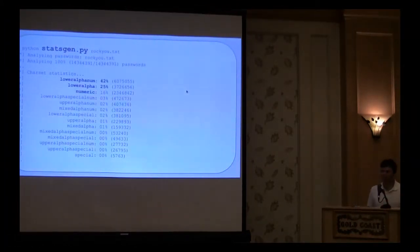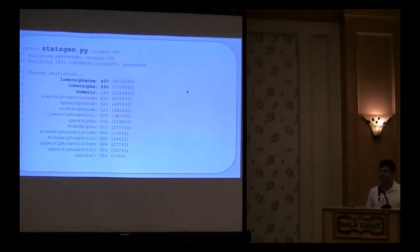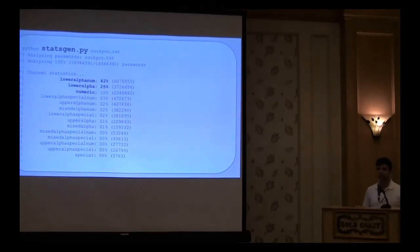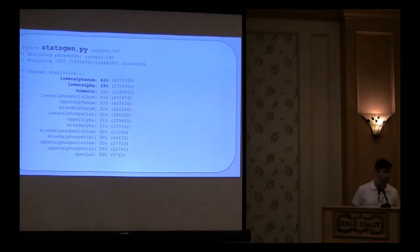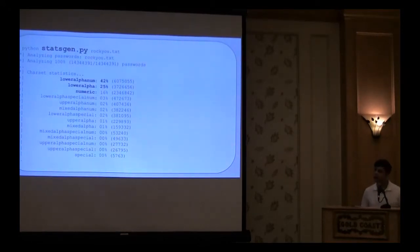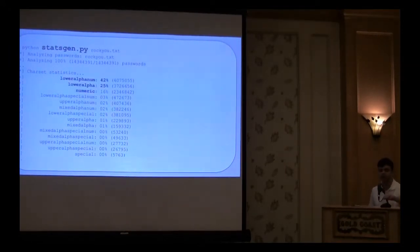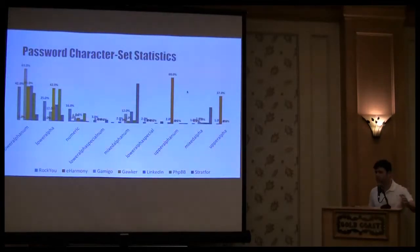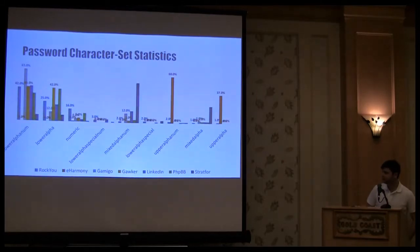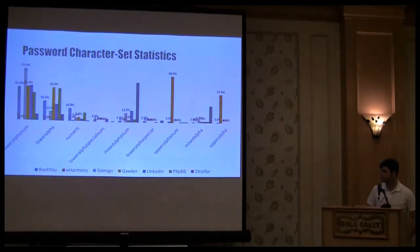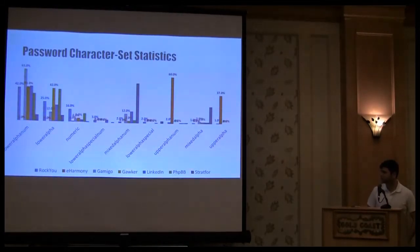Same thing with StatsGen. Another part of stats that you can generate is which character sets. Again, you can see for RockYou, the majority was lower alphanumeric. Once again, I applied it to a whole bunch of different leaked lists. You can see clear patterns on the very left where lower alpha is dominated by a majority of them. With a few exceptions.